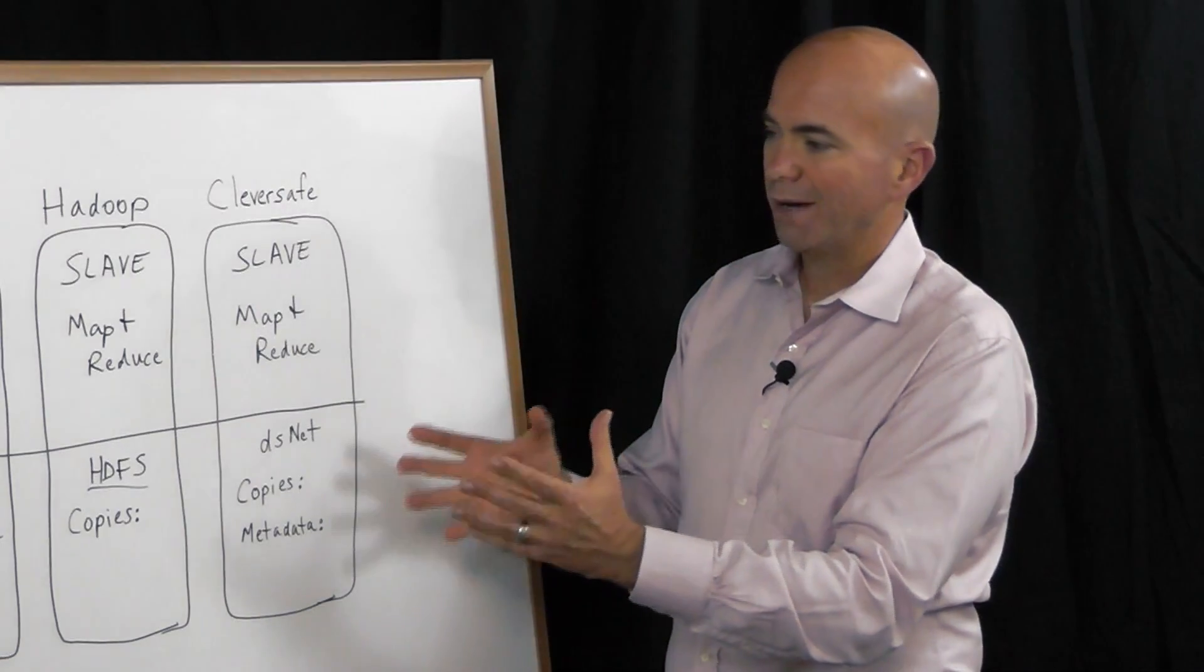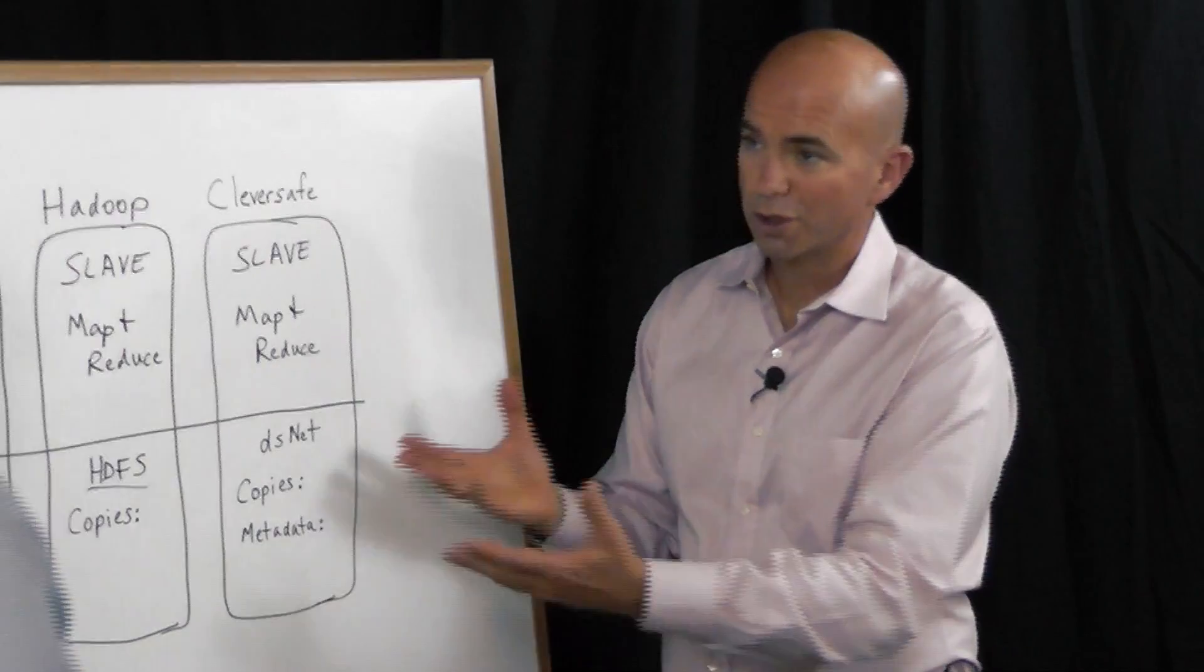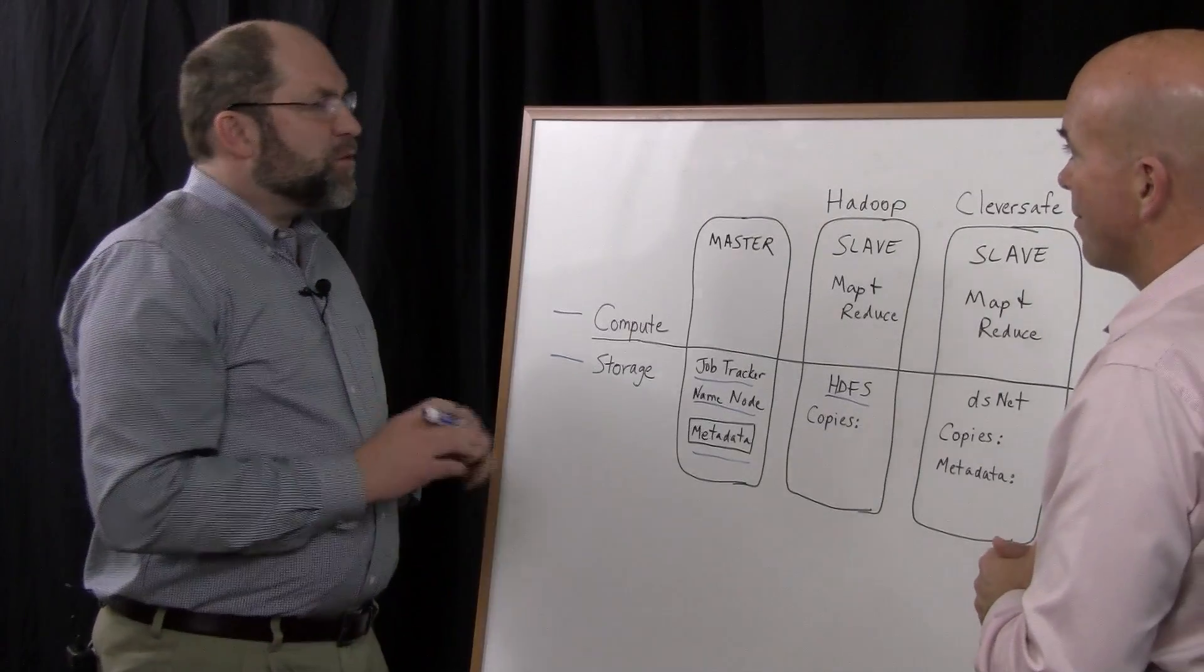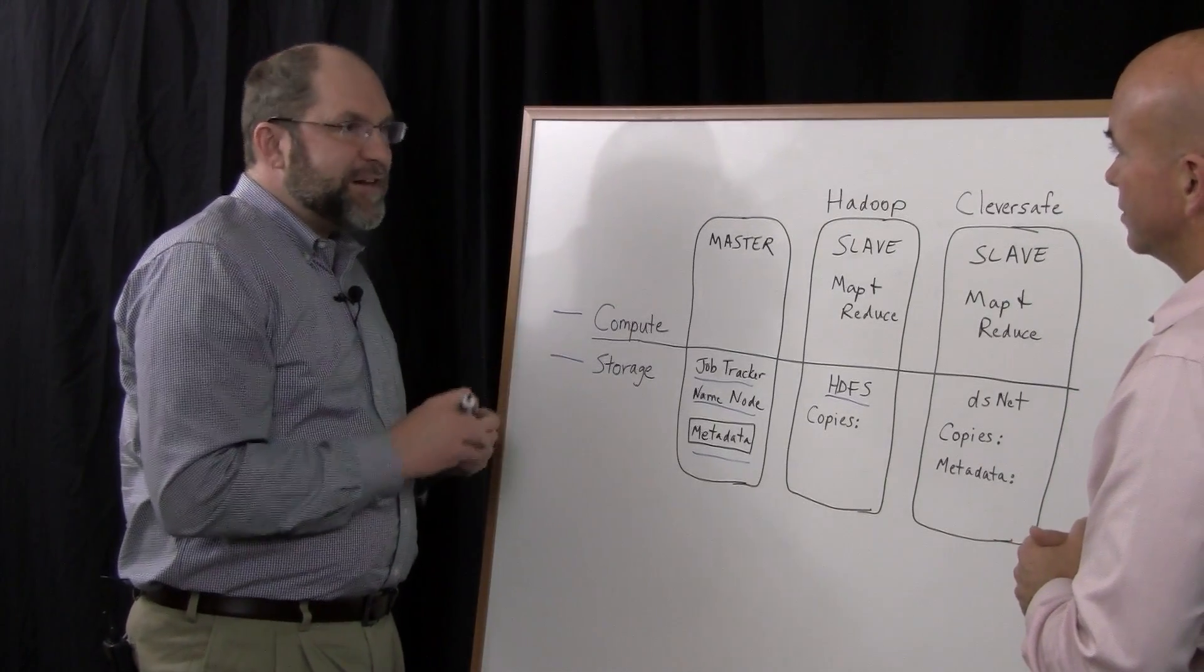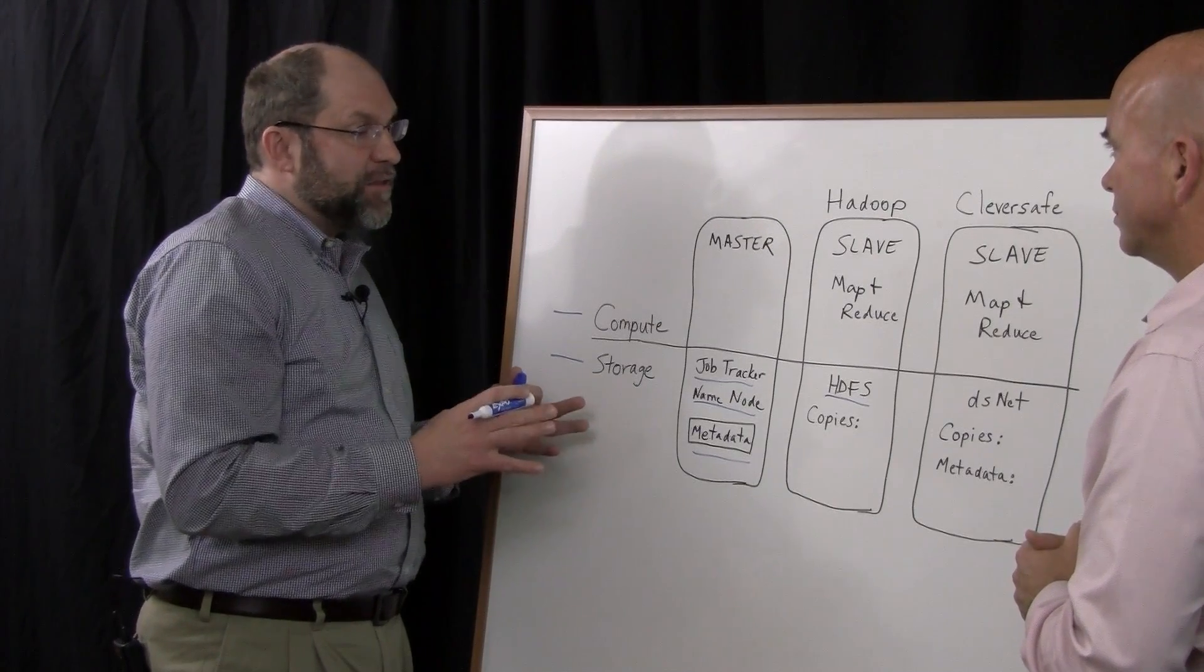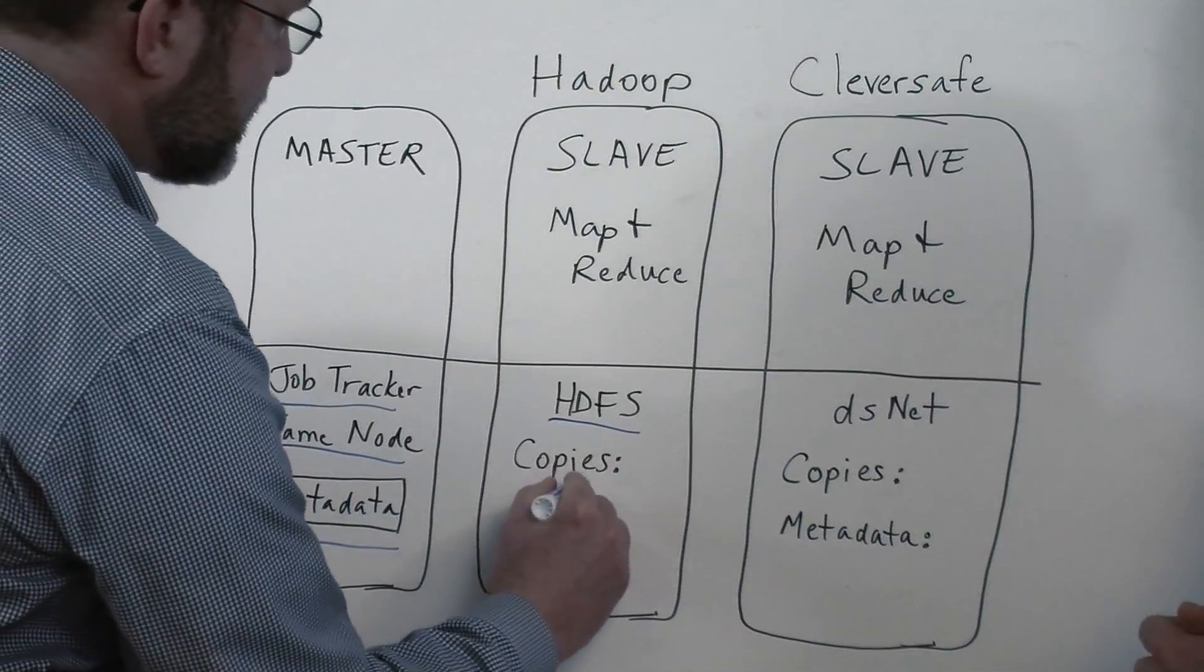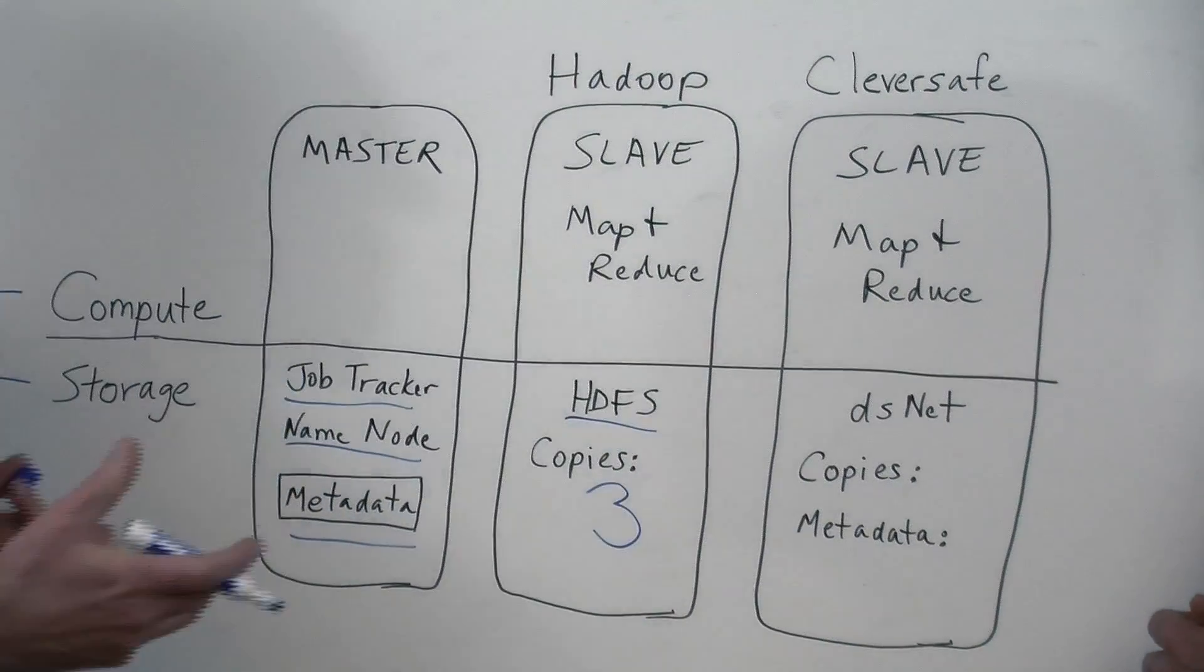The master node disperses the workload across the cluster. It also maintains what's called the name node, which is all the metadata for the data that's stored in the Hadoop Distributed File System. And then each slave is kind of a separate independent part of the big puzzle that runs MapReduce on locally stored data, and then the results get funneled together, channeled back up to the master, and that's how you get to the answer to your big compute problem.